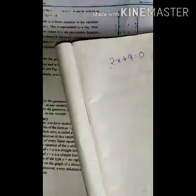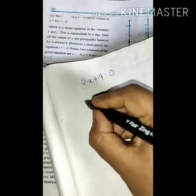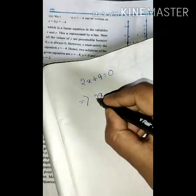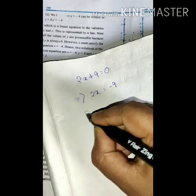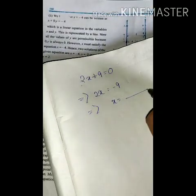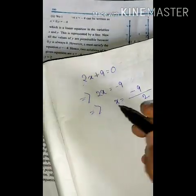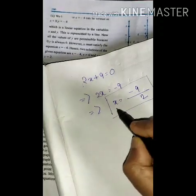The equation is 2x plus 9 equal to 0. That means 2x equal to minus 9. So x equal to minus 9 by 2. We'll represent this equation in one variable.